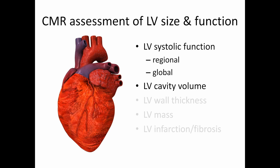We can measure left ventricular cavity volume in both diastole and systole. We can assess left ventricular wall thickness, both globally, in the case of concentric left ventricular hypertrophy, and also regionally, in the case of hypertrophic cardiomyopathy. We can quantify left ventricular mass with an accuracy that is second to none. And we can use late gadolinium enhancement imaging to identify areas of myocardial infarction or fibrosis.